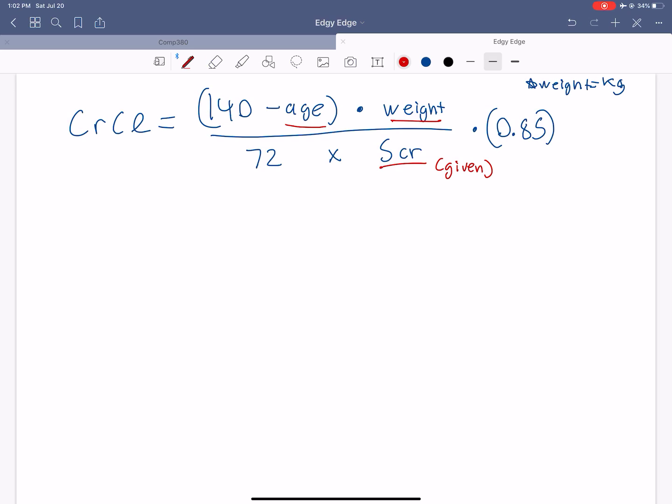Age is obviously reported by the patient and weight. Weight is kind of the trickier one because there's adjustments you have to make for the patient's weight based off their height, and we'll talk about that in this video.